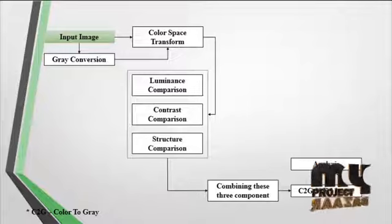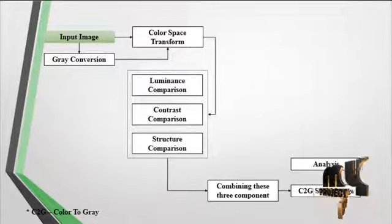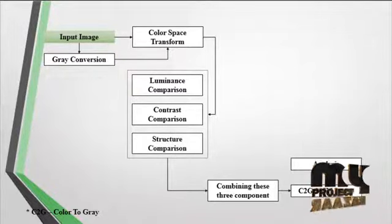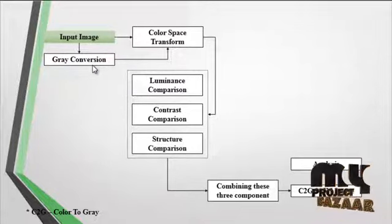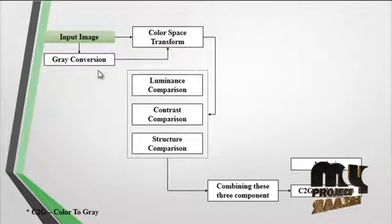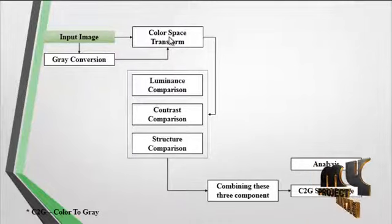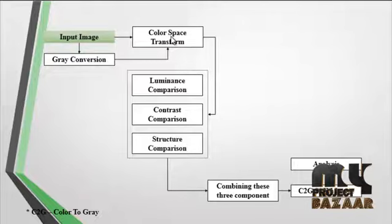Now we discuss the flow diagram for the process. At first, the input image is taken from the dataset. The dataset is nothing but a folder which consists of several images which are undergone for the process. After getting the input from the dataset, the grayscale conversion is carried out. This grayscale conversion is the initial grayscale conversion, and the color space transformation is carried out for that grayscale image.